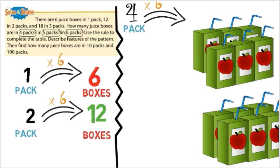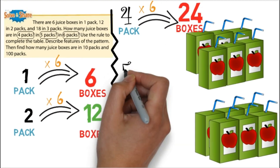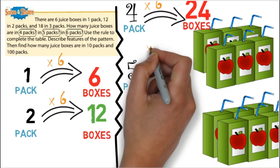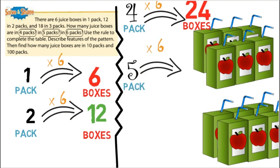For example, he asked us here how many boxes will be in four packs. You are gonna multiply four by six equals 24 boxes. In five packs the same, we're gonna multiply by six. Five multiplied by six equals 30.